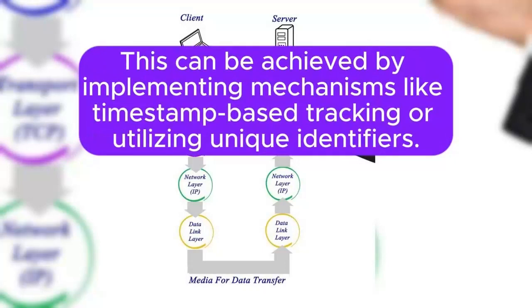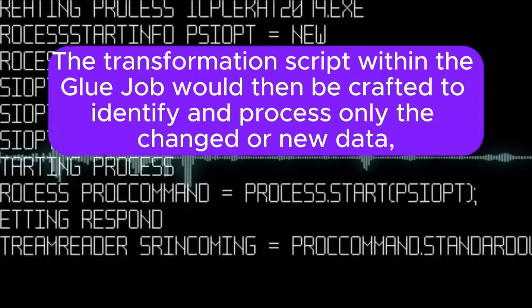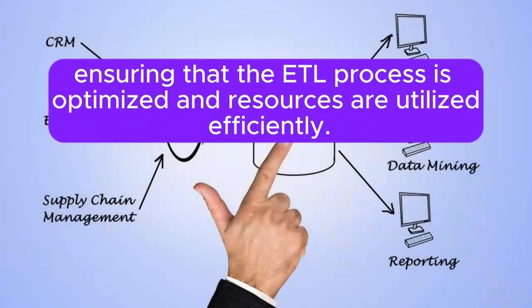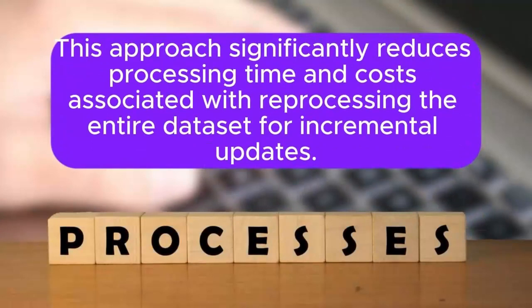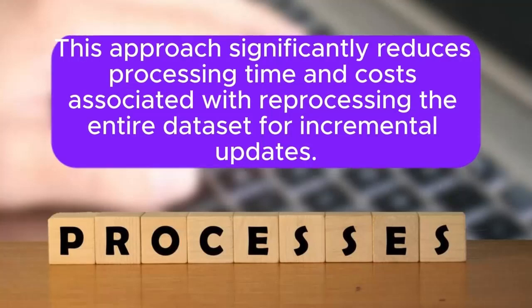This can be achieved by implementing mechanisms like timestamp-based tracking or utilizing unique identifiers. The transformation script within the Glue job would then be crafted to identify and process only the changed or new data, ensuring that the ETL process is optimized and resources are utilized efficiently. This approach significantly reduces processing time and costs associated with reprocessing the entire dataset for incremental updates.